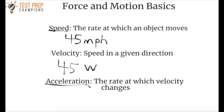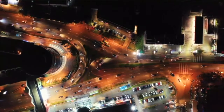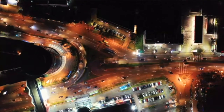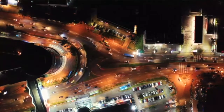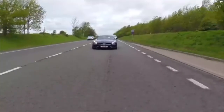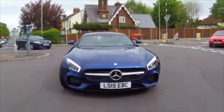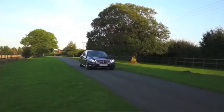Acceleration is the rate at which velocity changes. For example, if you're in the city and press the gas pedal to accelerate through a yellow light before it turns red, that's an example of acceleration. Changing speed is acceleration, and so is changing direction — taking a right turn, a left turn, or reversing the car all count as changing your direction.